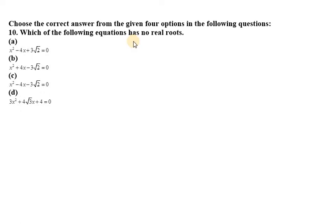Hello everyone, let's start with question number 10. In this question, it says which of the following equations has no real roots. We are given 4 equations and we need to check whether each equation has no real roots or not. For no real roots, the discriminant D must be less than 0. This condition must be satisfied for us to say that an equation has no real roots.